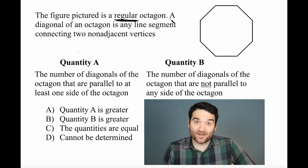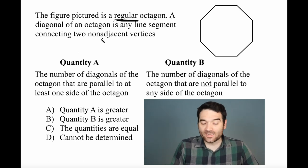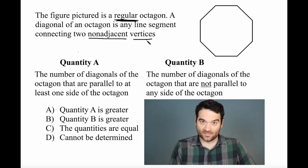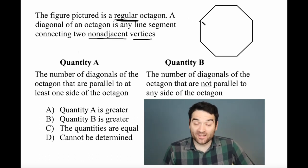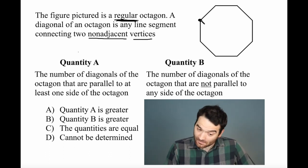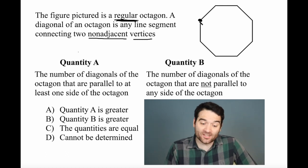Then they define what a diagonal is. A diagonal of an octagon is a line segment that connects two non-adjacent vertices. So what is a vertex of an octagon? A vertex is a point, one of these corners. There are eight vertices here, eight little corners in this octagon.